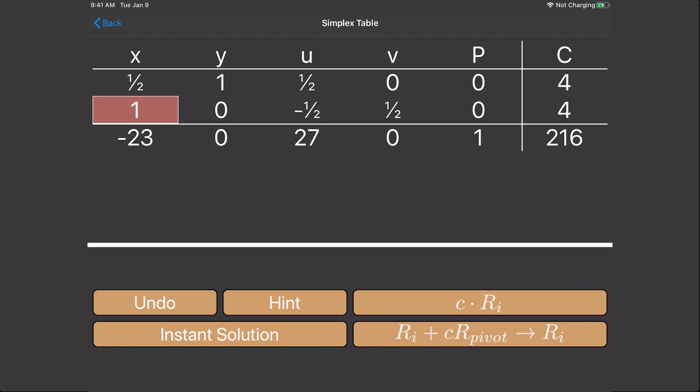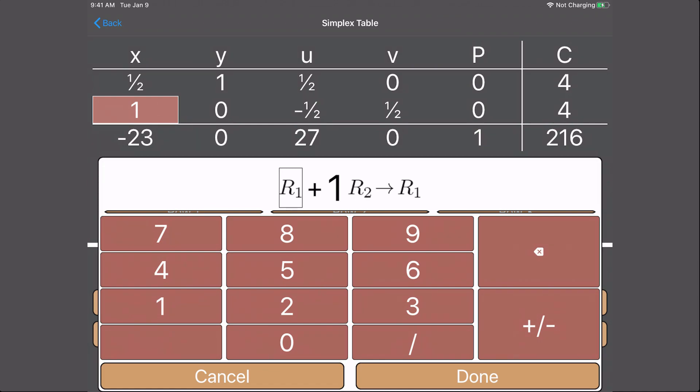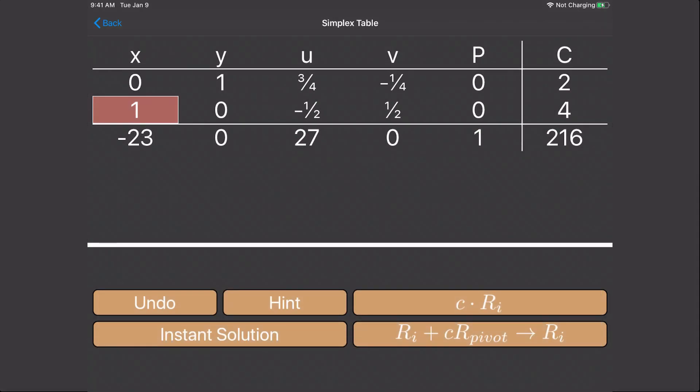Now we need to make it a unit column. Because these two numbers are not 0, we have to do the following. So what row do I want to change? What is our pivot row? And what number cancels a positive 1 half? The new row is going to be 0, 1, 3 fourths, negative 1 fourth, 0, and 2.